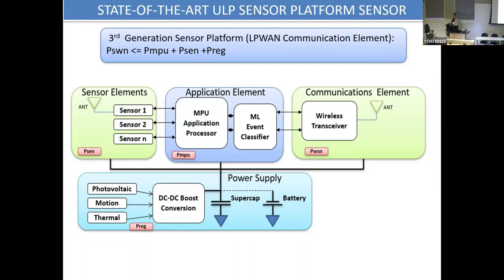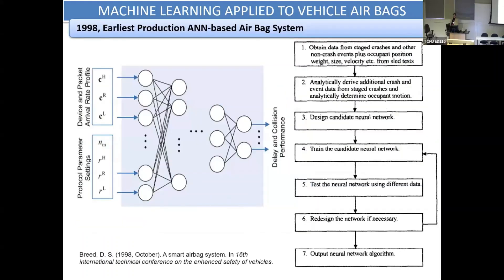We're moving to a third generation of wireless transceivers, primarily NB-IoT, LTE-M, or LoRa. These are very popular in Europe right now. Let's talk about some early examples of machine learning that you've never heard about — and you've never heard about them for good reason.